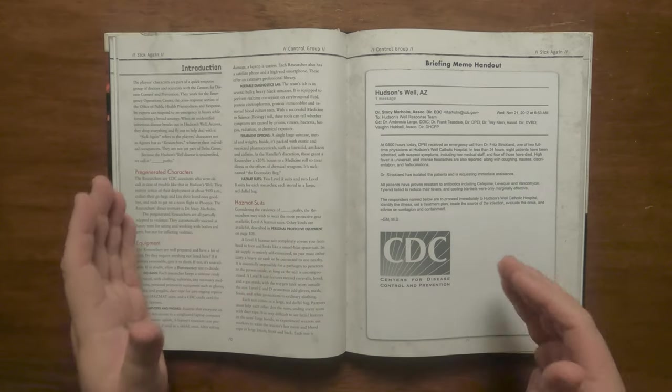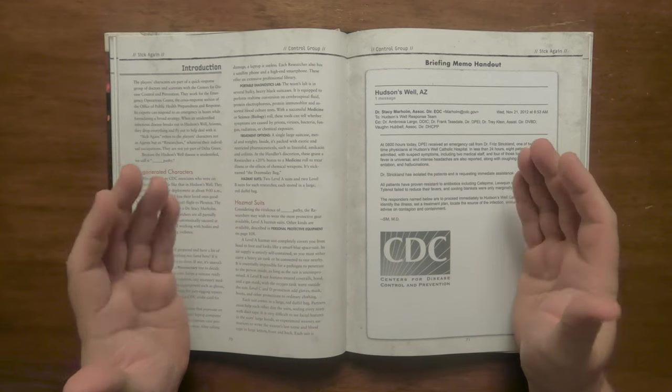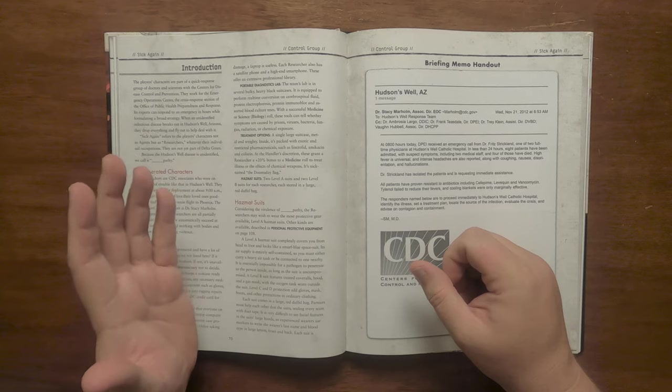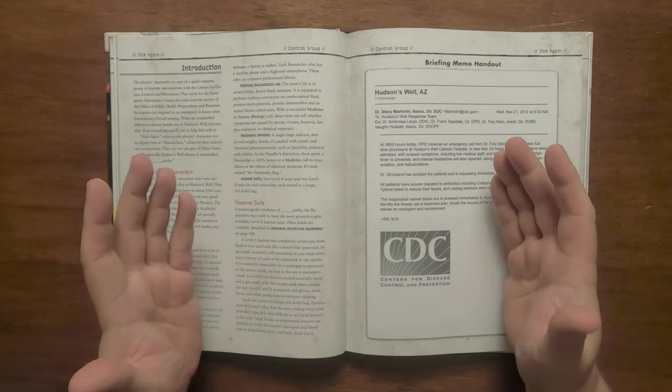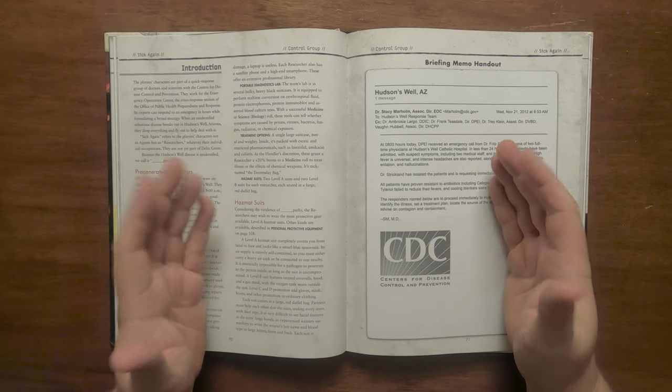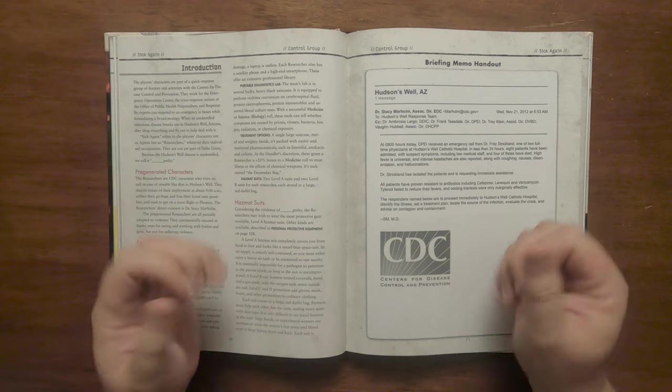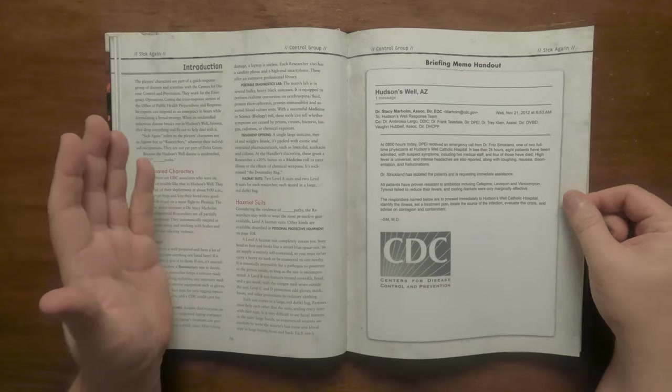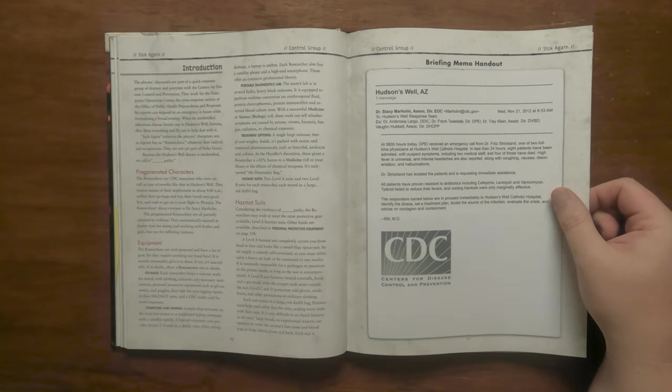The researchers need help getting into the suits and sealing every seam and due to the way it obscures vision they write their name and blood type on the front and back. While wearing a suit physical mobility is limited and reflected in skill use and the oxygen tank cannot be changed on a Level A without removing the whole suit and has an hour's worth of supply. Running out of oxygen causes suffocation. If the suit is breached air blows from the inside out in order to push toxins away.